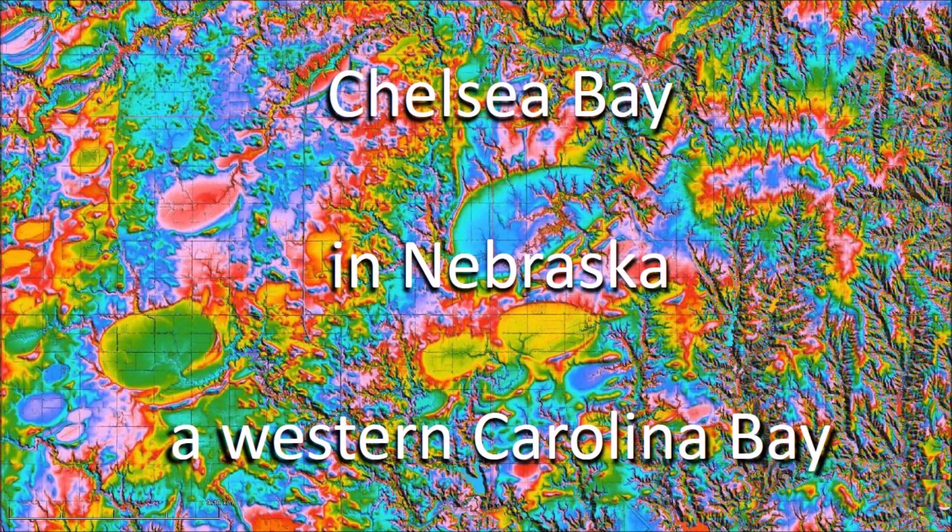Chelsea Bay is a massive landform, extending over 7 kilometers in length and almost 4 kilometers wide. The basin, located in Fillmore County, Nebraska, has the typical southwest orientation of the Nebraska Rainwater Basins.